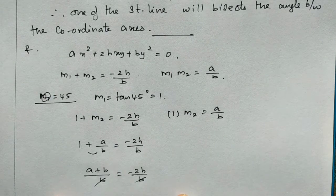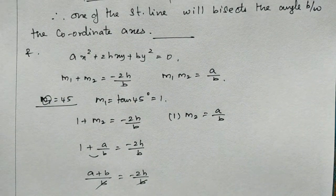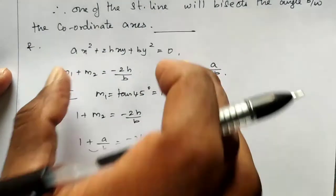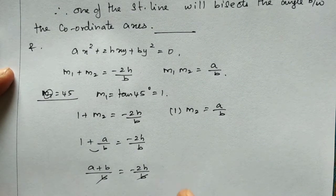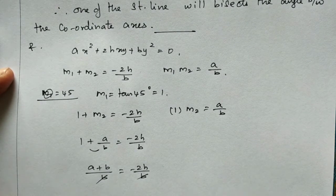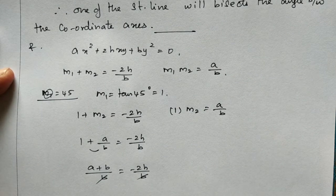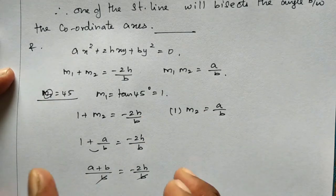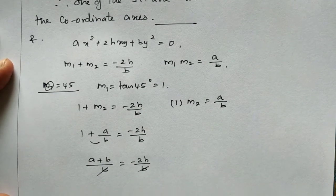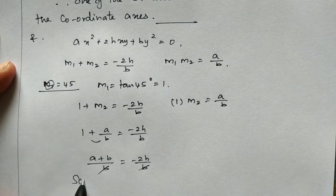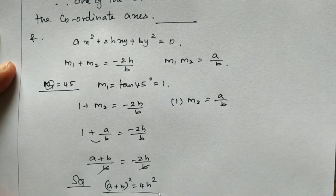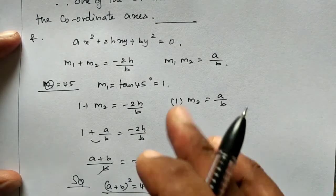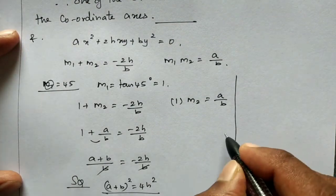One of the straight lines is Y = X (slope 1). For M1 = 135°, they bisect each other. So one of the straight lines bisects the coordinate angle. The result is (A + B)² = 4H².